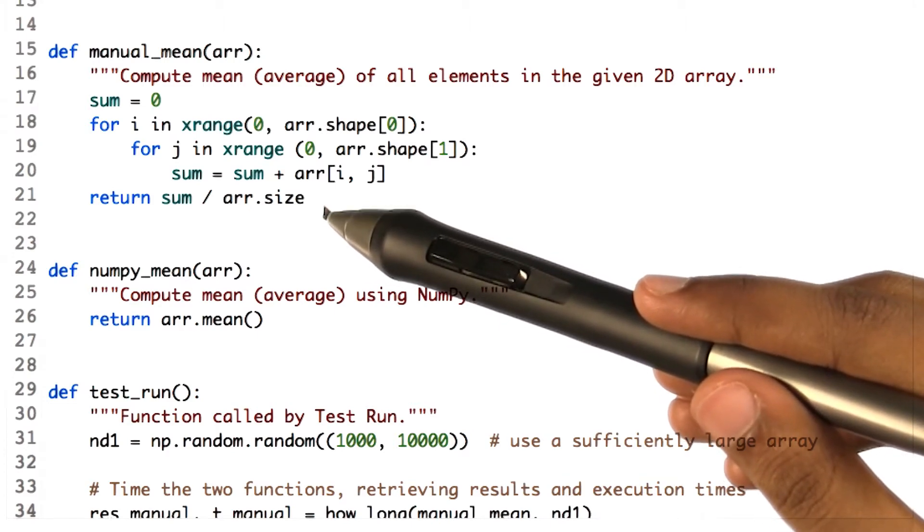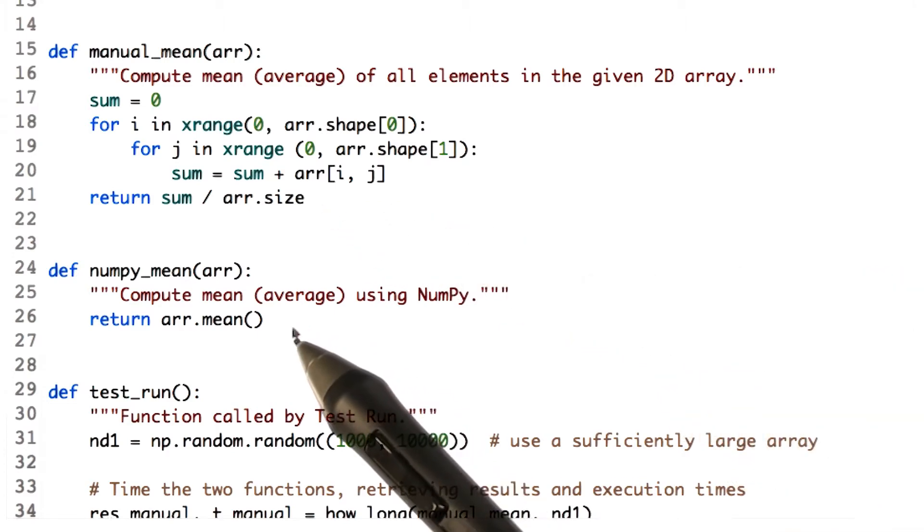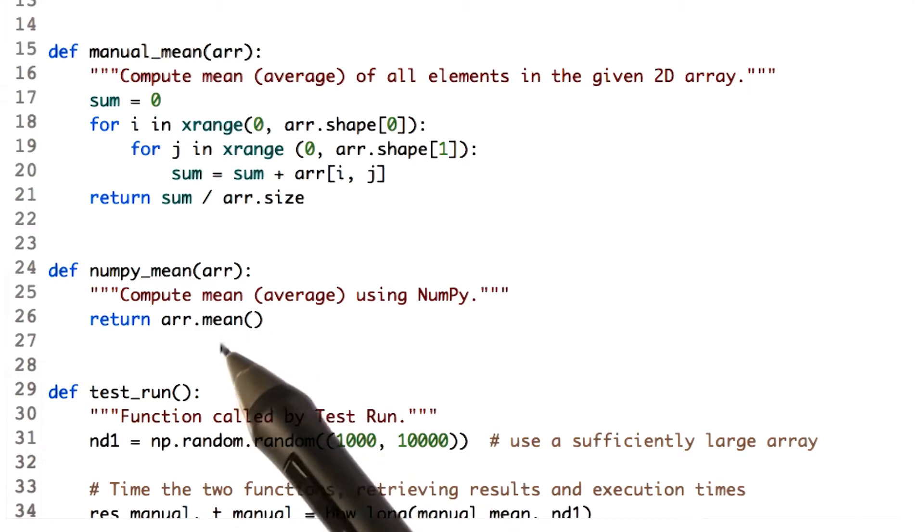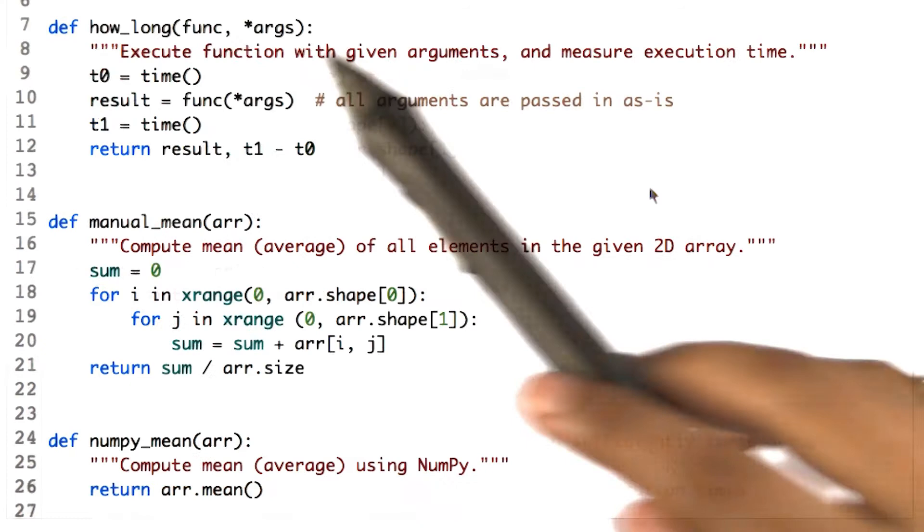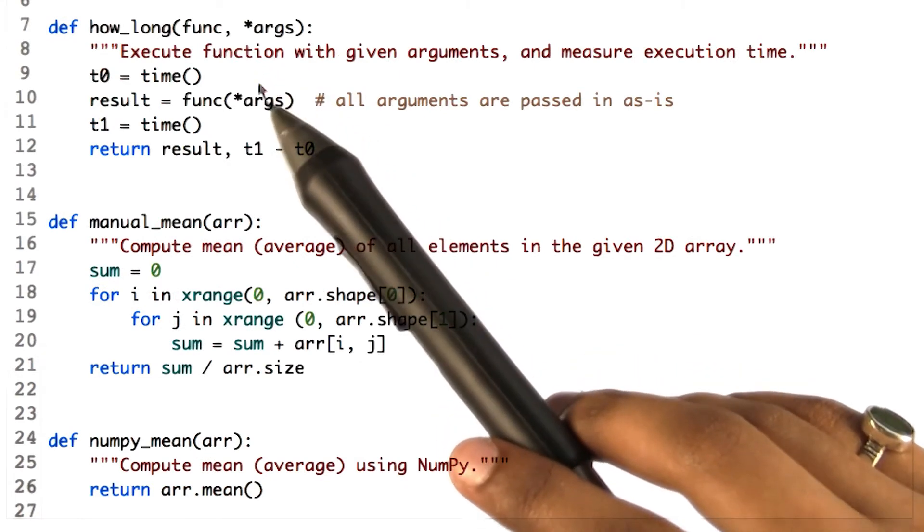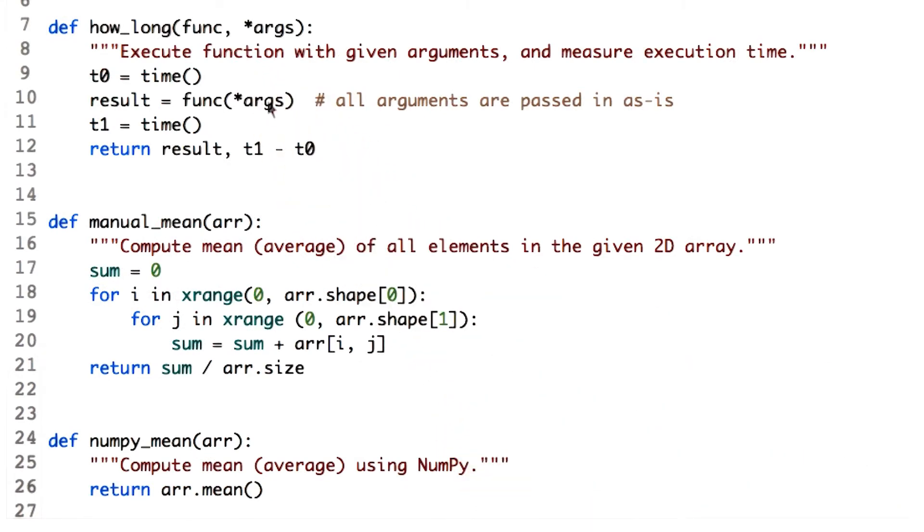In case of using NumPy for calculating the mean, we just write array.mean to get the mean of the entire array. The how_long function will compute the time each method takes.